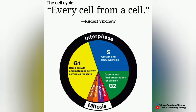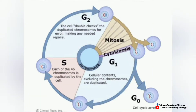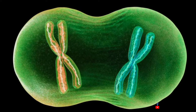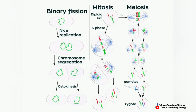A cell cycle is a series of events that takes place in a cell as it grows and divides. A cell spends most of its time in what is called interphase, and during this time it grows, replicates its chromosomes, and prepares for cell division. The cell then leaves interphase and undergoes mitosis and completes its division.